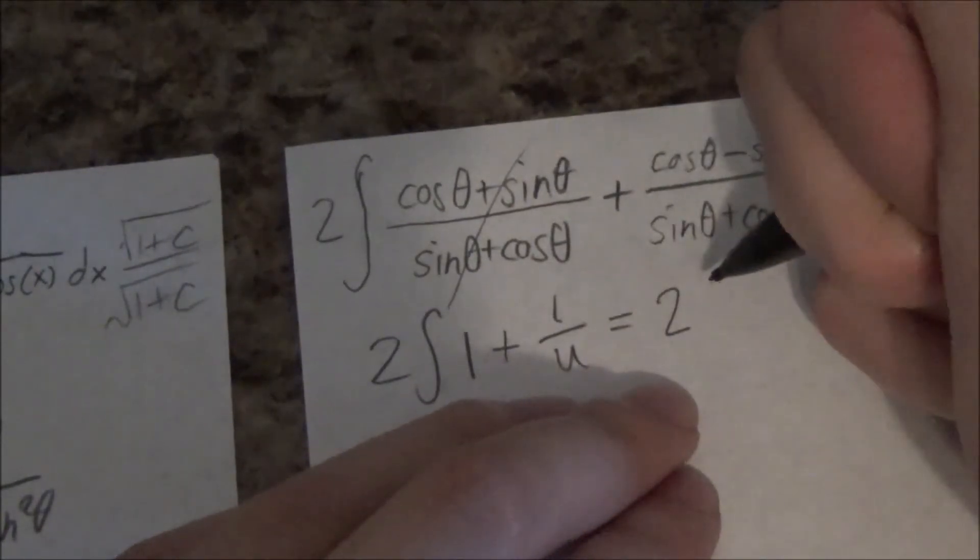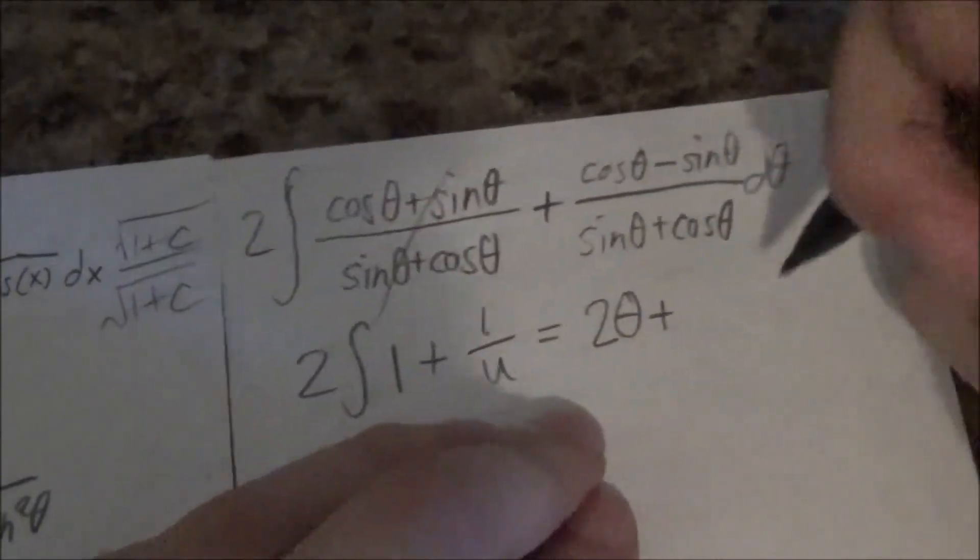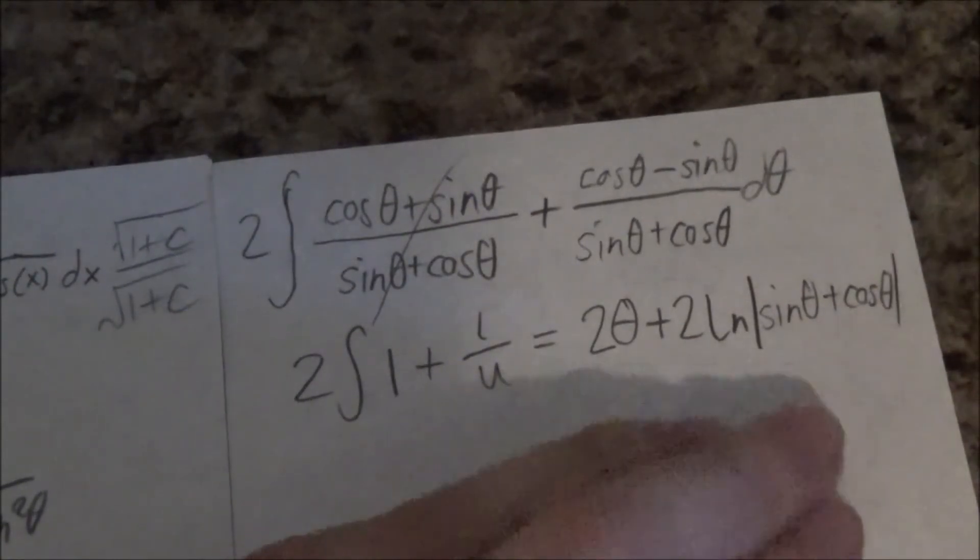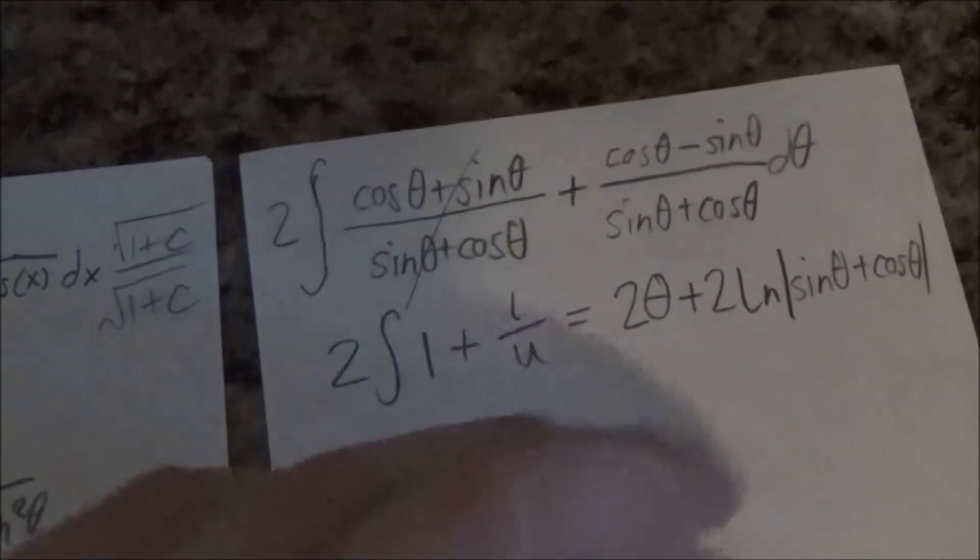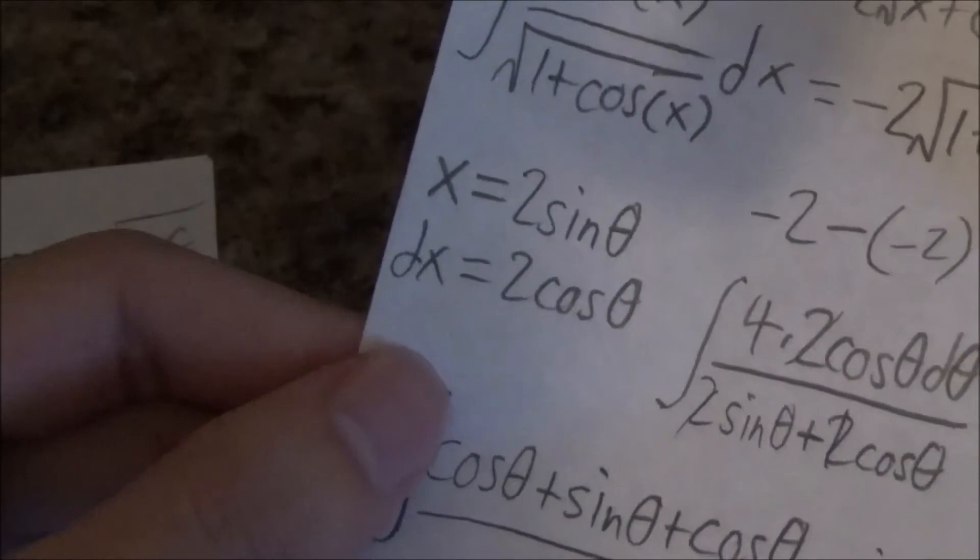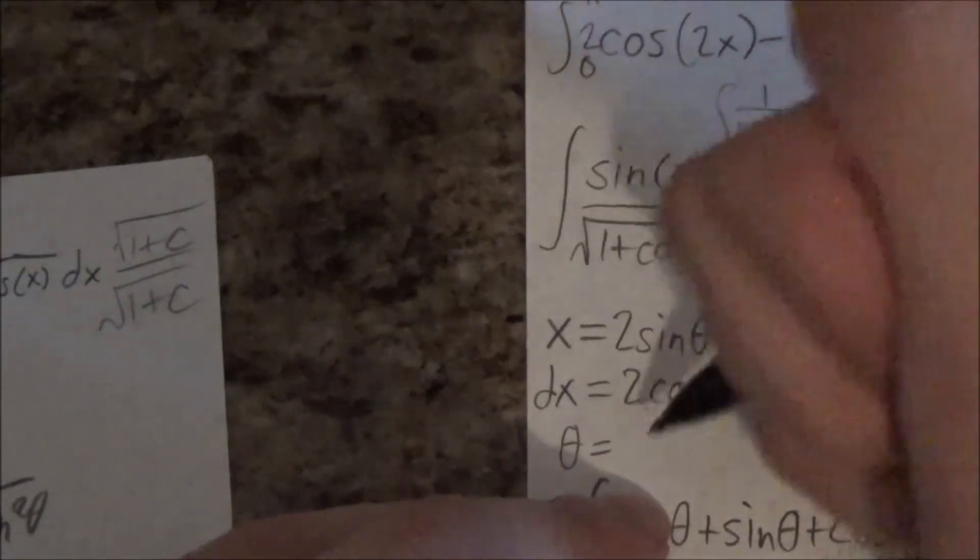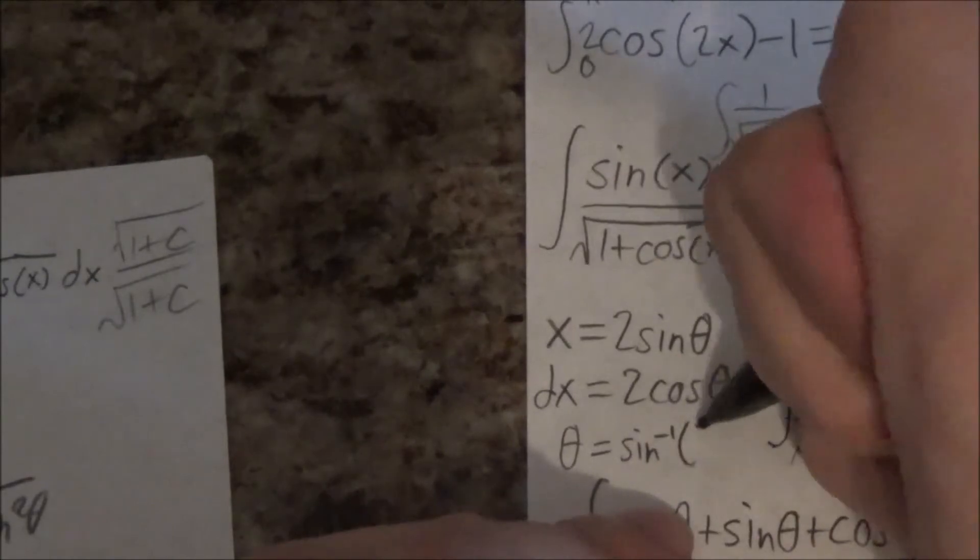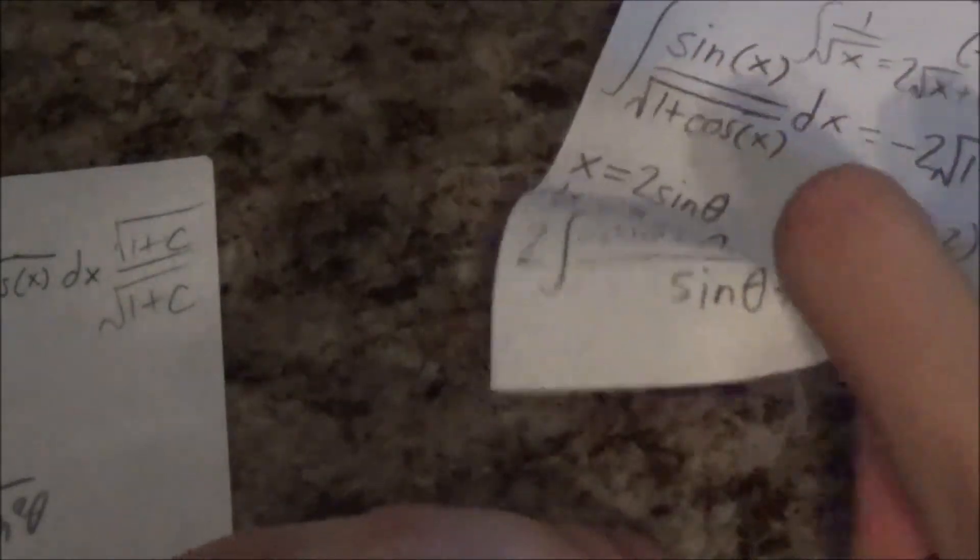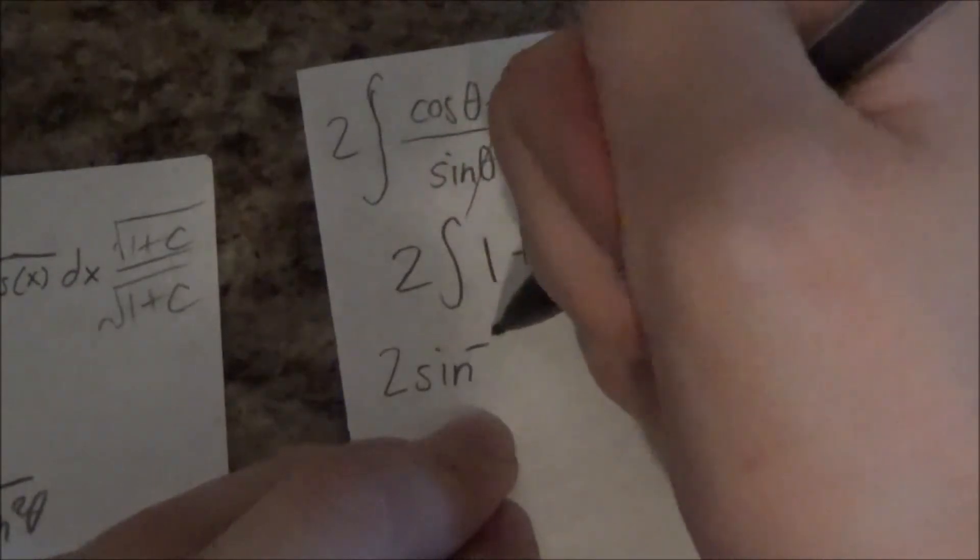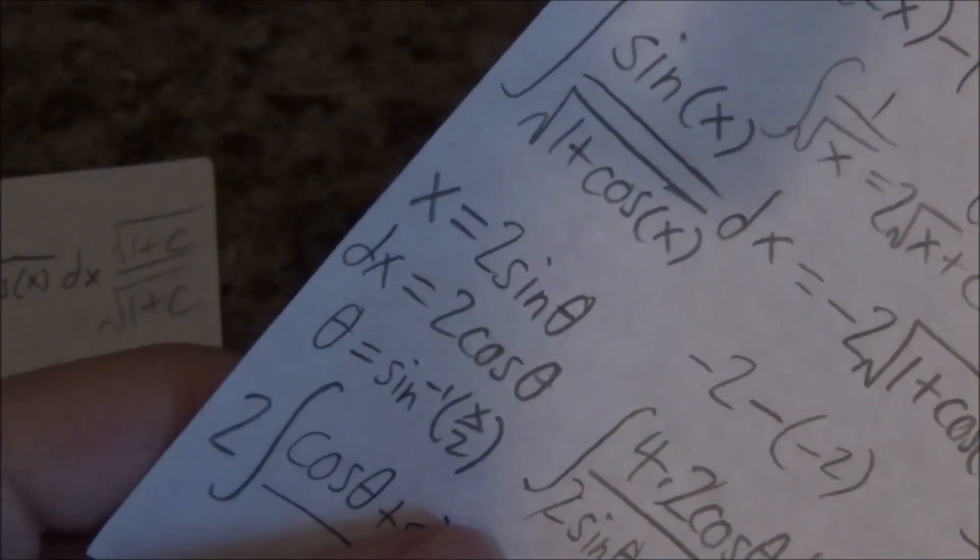And so this is, so I get two, two theta plus two ln of sine theta plus cosine theta. And so theta, what what what, what is theta? So theta is equal inverse sine, x over 2. Yeah, the inverse sine of x over 2. So inverse sine of x over 2. So I always had to double check cause I make a lot of mistakes. Okay.